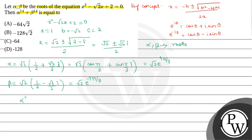Now, alpha power 14 equals to root 2 to the power of 14, e power i pi by 3 to the power of 14. Which equals to root 2 to the power of 14 into e power i 2 pi by 3. Similarly, beta to the power of 14 equals to root 2 to the power of 14 into e power minus i 2 pi by 3.